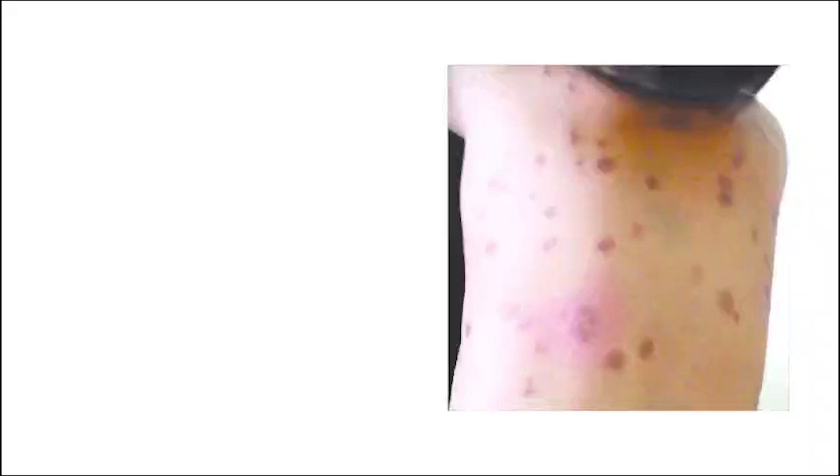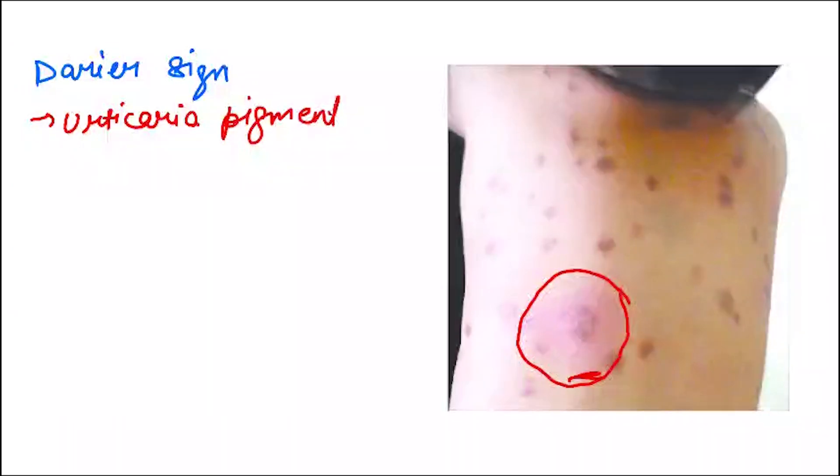This is what I want you to see. Here you can see a wheal. This is Darier sign. When a pigmented lesion is rubbed with the help of a rounded end of a pen, we can see an urticarial wheal over there. This is known as Darier sign. It is seen in urticaria pigmentosa, histocytosis, leukemia, and xanthogranuloma.